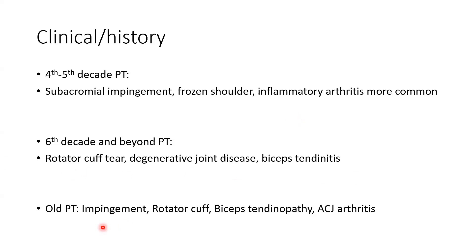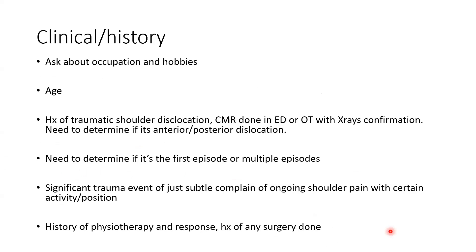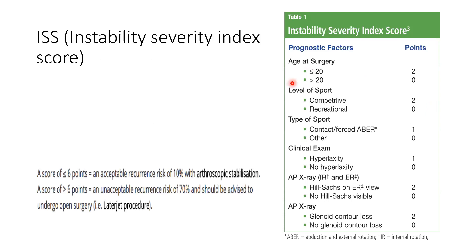For patients 40 years and above, the more common causes are impingement, rotator cuff pathology, biceps tendinopathy, and ACJ arthritis. In clinical history taking, we ask about occupation, hobbies, age, history of traumatic shoulder dislocation, whether CMR was done in ED or OT, X-ray confirmation, direction of dislocation, whether it's the first or multiple episodes, any physiotherapy response, and any prior surgery. We can grade the instability using the Instability Severity Index Score.